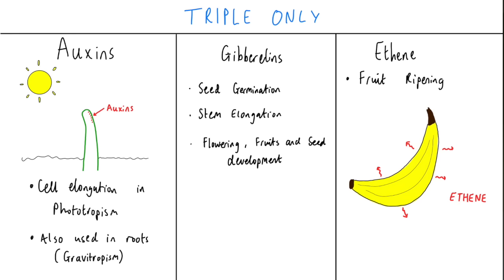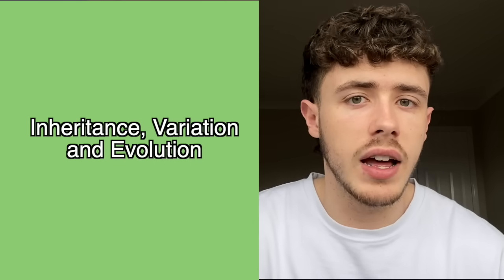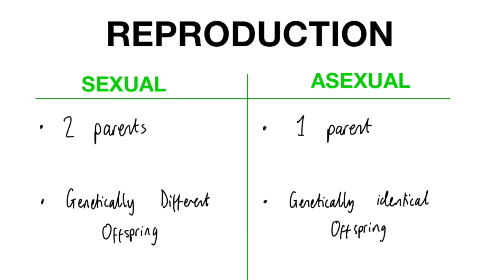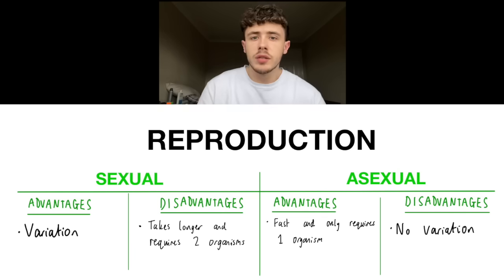Finally, plant hormones. Plants have auxins and gibberellins, which help plant elongation and basically growth. Fruits also release ethene, which helps them ripen. Moving on to topic number two: inheritance, variation and evolution. In this topic, we talk about sexual and asexual reproduction. Sexual reproduction involves two parents and produces genetically different offspring, whereas asexual reproduction requires only one parent and often produces identical offspring. Here are some advantages and disadvantages about each of those.